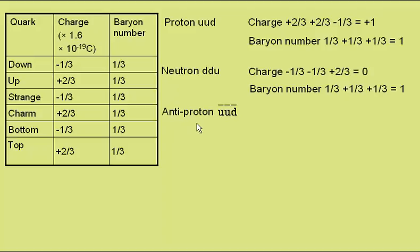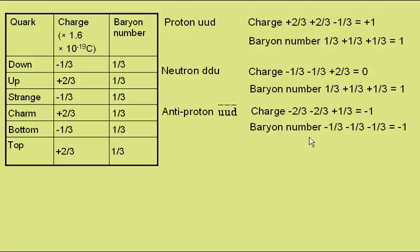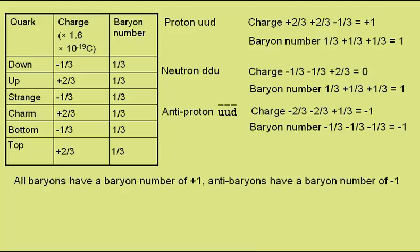The anti-proton is the same as the proton, but with each quark replaced by the anti-quark, so it's an anti-up, anti-up, anti-down. This gives a charge of minus two thirds, minus two thirds, plus one third, or a charge of minus one — the opposite charge to the proton. Baryon number is minus a third, minus a third, minus a third, giving a baryon number of minus one. As you might expect, all baryons have a baryon number of plus one, and anti-baryons a baryon number of minus one.